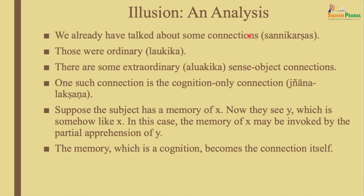Even if the cognitive system cannot capture something from the real world, it will supply the system with that content — all gaps are filled up. This is another law exclusive to the world of cognitions; it is not an ordinary ontological rule. There is no incomplete cognition. If all aspects are not captured, somehow the system provides the cognition with contents.